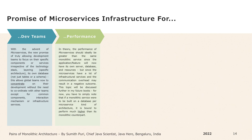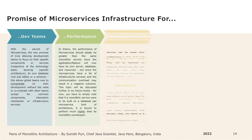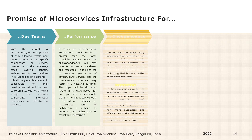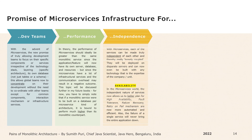Services will be deployed on disparate servers and can now even be built with any technology that is the expertise of the company or unit. The next point is on availability. In the microservices world, the independent nature of services now allows us to better plan for high availability. Fault tolerance, failure recovery, and retry-on-fail mechanisms are now more automated and efficient. Also, the failure of a single service will never bring the entire application down.